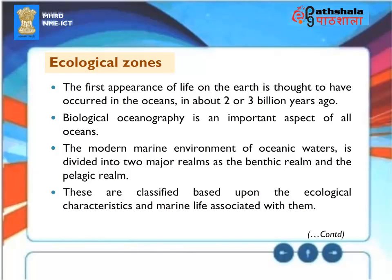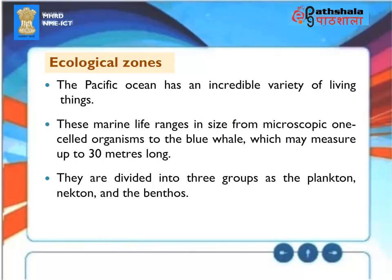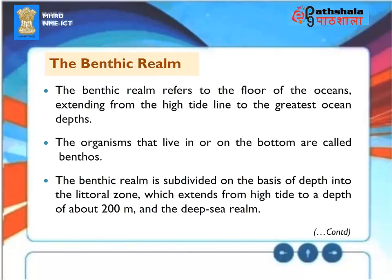Ecological Zones: The first appearance of life on Earth is thought to have occurred in the oceans about two to three billion years ago. The modern marine environment of oceanic waters is divided into two major realms: the benthic realm and the pelagic realm, classified based on ecological characteristics and marine life. The Pacific Ocean has an incredible variety of living things, ranging in size from microscopic one-celled organisms to the blue whale, which may measure up to 30 meters long. Marine life is divided into three groups: plankton, nekton, and benthos.